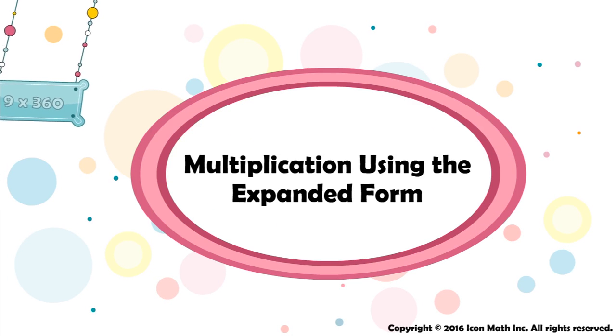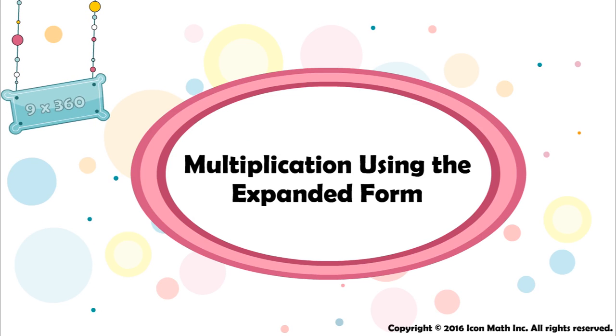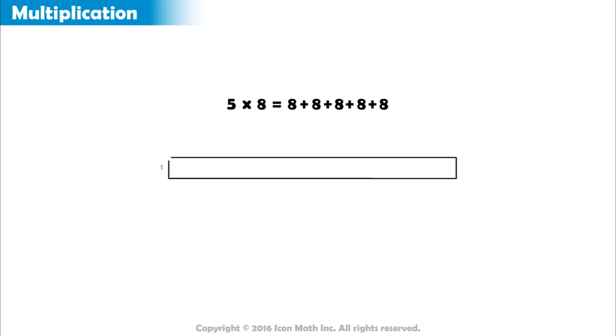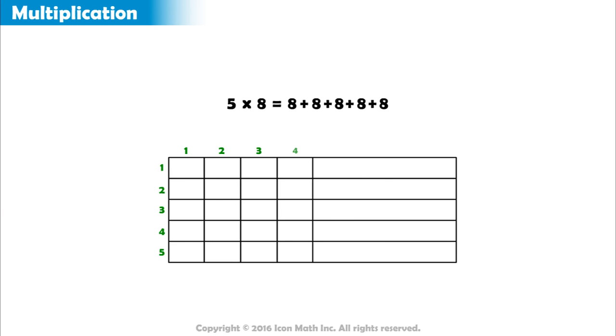Multiplication using the expanded form. Multiplying a one-digit whole number by another one-digit whole number can be done through repeated addition or through constructing a visual array.